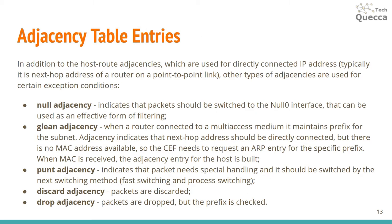In addition to host-route adjacencies used for directly connected IP addresses, other types of adjacencies exist for exception conditions. Null adjacency indicates packets should be switched to the null interface, acting as an effective filter. Glean adjacency is used when a router is connected to a multi-access medium and the next-hop should be directly connected but no MAC address is available, so CEF requests an ARP entry for the specific prefix; when the MAC address is received, the host adjacency entry is built. Punt adjacency indicates the packet needs special handling and should be switched by fast switching or process switching. Discard adjacency is used when packets are discarded. Drop adjacency means packets are dropped but the prefix is still checked.